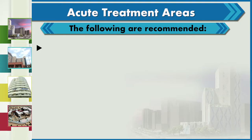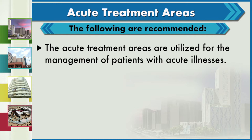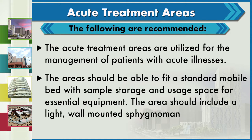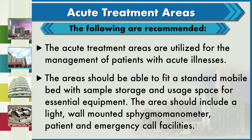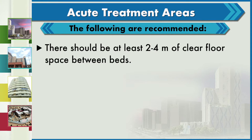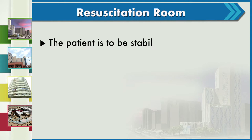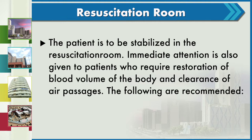Acute treatment areas are utilized for management of patients with acute illnesses. They should fit a standard mobile bed with separate storage and usage space for essential equipment, include a wall-mounted monitor and patient and emergency call facilities, and have at least 2 to 4 meters of clear floor space between beds, with each treatment area requiring 15 square meters of space. In the resuscitation room, patients are stabilized and immediate attention is given to restoration of blood volume and clearance of air passages.